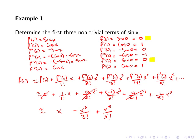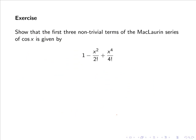Notice that in the Maclaurin series of sine of x, all the powers of x are odd — that is x to the 1, x to the 3, x to the 5, and so on. Similarly, it turns out that in the Maclaurin series of cos of x, all the powers of x are even — that is x to the 0, x to the 2, x to the 4, and so forth. As an exercise, show that the first three non-trivial terms of the Maclaurin series of cos x is given by 1 minus x squared over 2 factorial plus x to the 4 over 4 factorial.